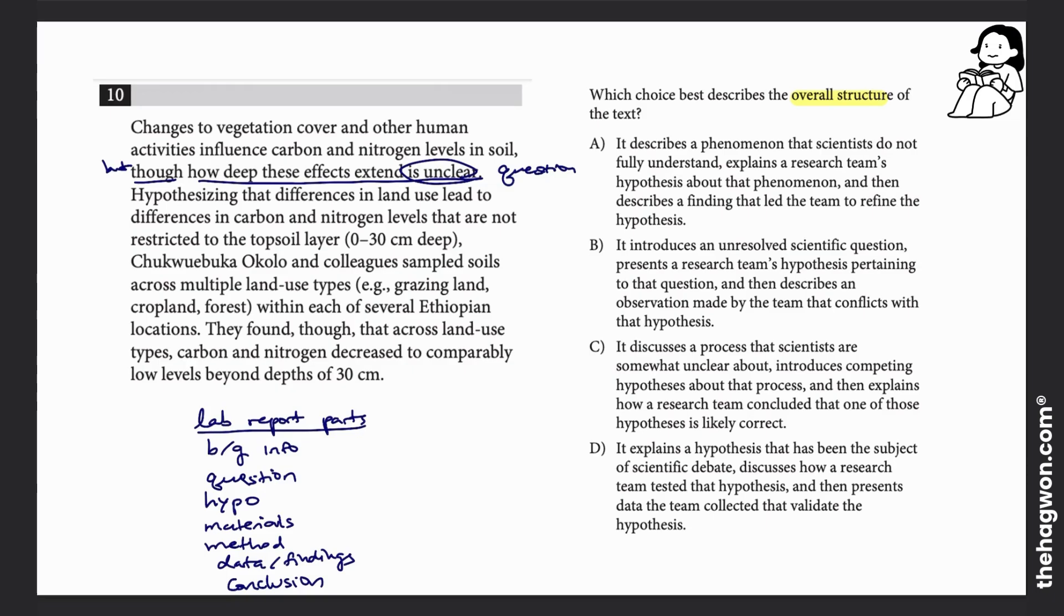We don't know how deep these effects extend. Then it says 'hypothesizing,' so I know we have a hypothesis. The hypothesis is that difference in land means difference in nitrogen and carbon levels. That's my hypothesis.